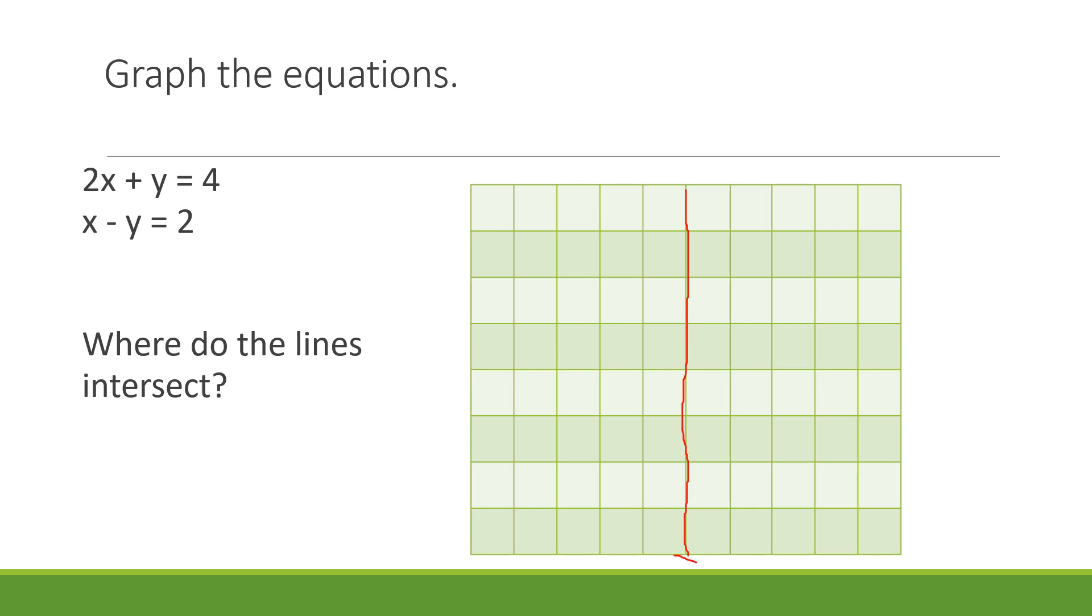From our previous slides, we can use this graph here. Let's put the y-axis at the center. If you are using a ruler, this will be easy. So this will be your 1, 2, 3, and 4. On the other side, it will be negative 1, negative 2, negative 3, negative 4.